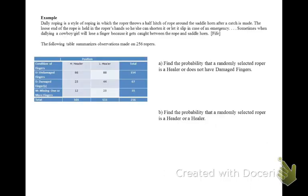Dally roping is a style of roping in which the roper throws a half hitch of rope around the saddle horn after it catches. The loose end of the rope is held in the roper's hand so that he or she can shorten it or let it slip in case of emergency. Sometimes when dallying, a cowboy or girl will lose a finger because it gets caught between the rope and the saddle horn. The following table summarizes observations made on 256 ropers.